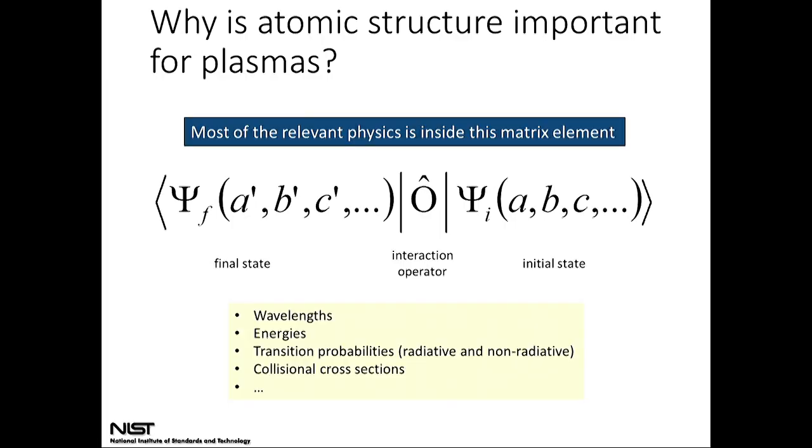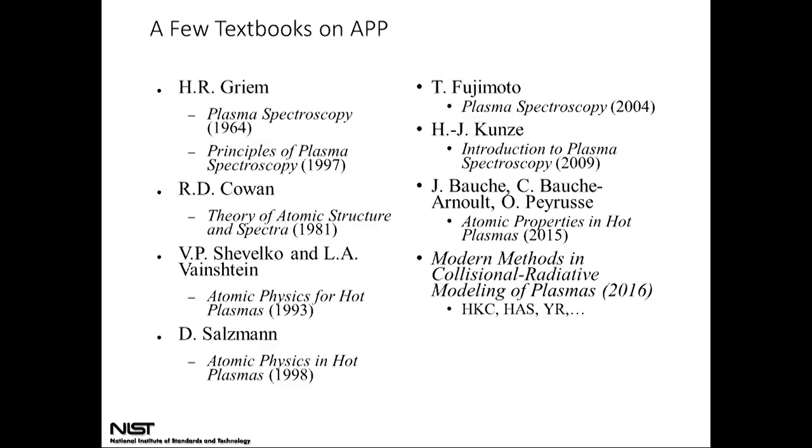Certainly we understand why atomic structure is important. Whenever we're talking about atomic physics, there is always some kind of matrix element that we have to calculate or analyze. We have an initial state characterized by a set of quantum numbers, the final state, and an operator in between. So whenever we're talking about calculations of wavelengths, energies, transition probabilities, whether radiative or non-radiative, collision cross sections, or anything else relevant, most of the relevant physics is inside this matrix element.